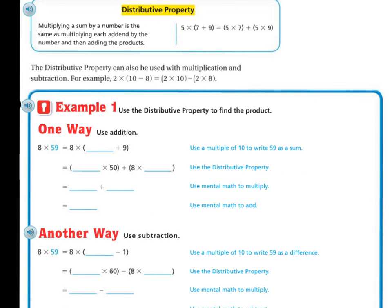Distributive property. Multiplying a sum by a number is the same as multiplying each addend by the number and then adding the products. So for example, if I have 7 plus 9 and I'm multiplying all that times 5, I could say 5 times 7 and 5 times 9 gives me the same thing. So I have 5 times 7, 5 times 9, and then I would add those two together.